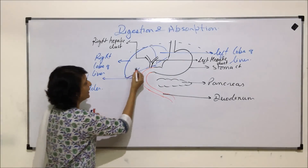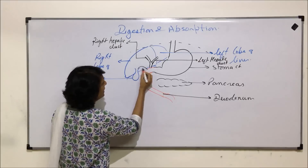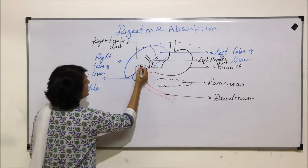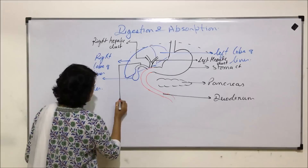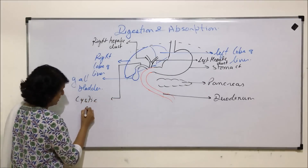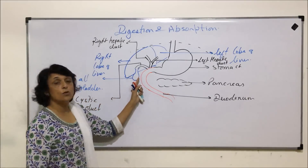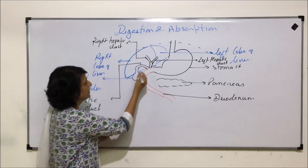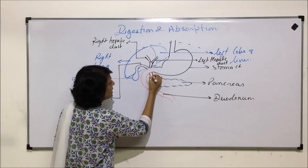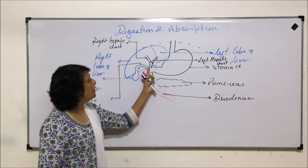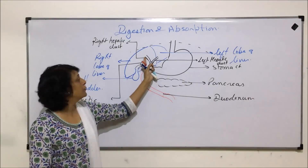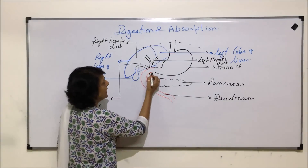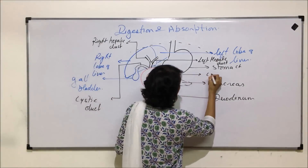These two hepatic ducts join to form a common hepatic duct. To this common hepatic duct is attached a duct coming from the gallbladder. The duct coming from the gallbladder is known as the cystic duct. The cystic duct brings bile that is stored in the gallbladder.